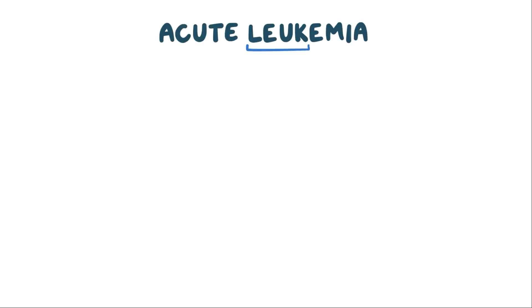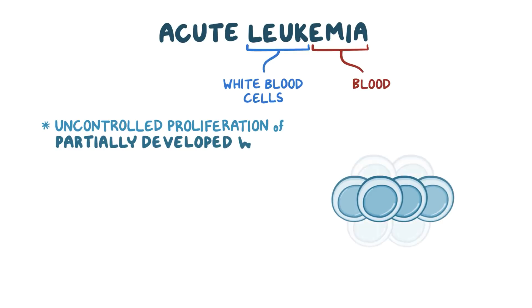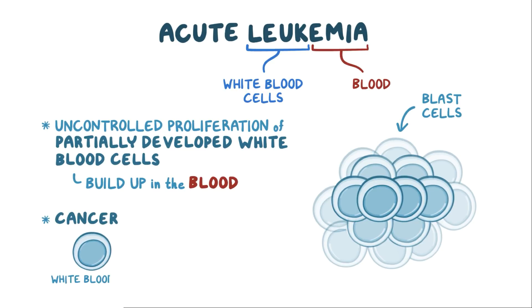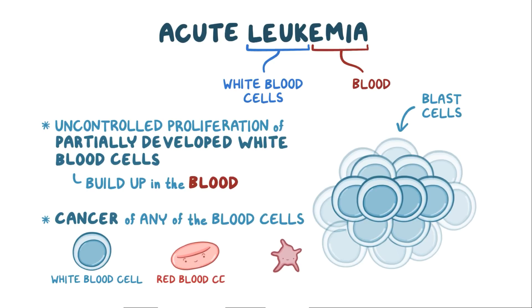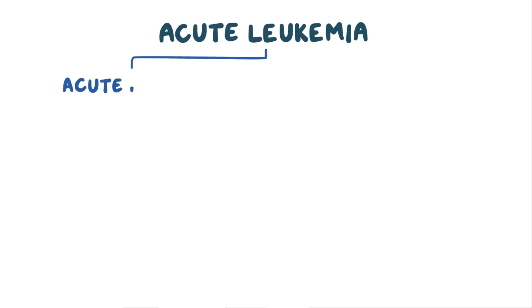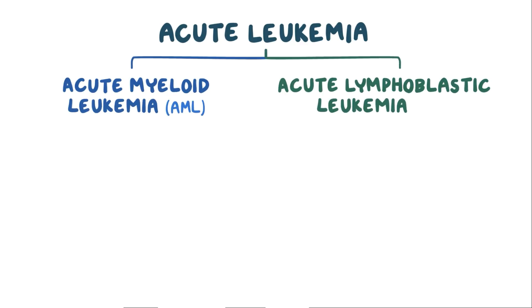With acute leukemia, leuk refers to white blood cells, and emia refers to the blood. So in acute leukemia, there's uncontrolled proliferation of partially developed white blood cells, also called blast cells, which build up in the blood over a short period of time. Although leukemia specifically means cancer of the white blood cells, it can also refer to cancer of any of the blood cells, including red blood cells and platelets. Acute leukemia can be broadly classified into acute myeloid leukemia, or AML, and acute lymphoblastic leukemia, or ALL.